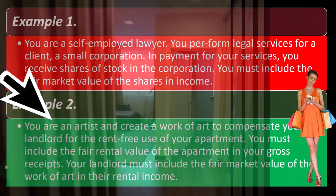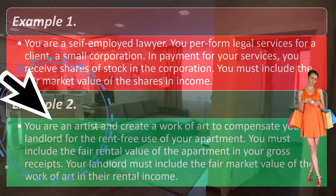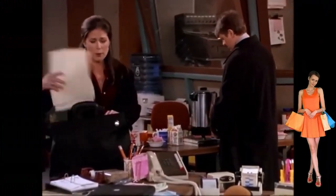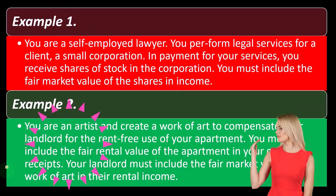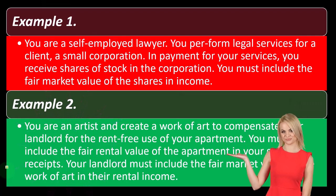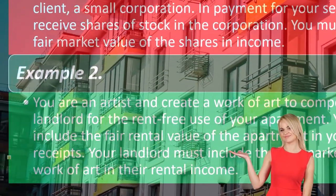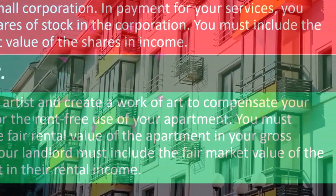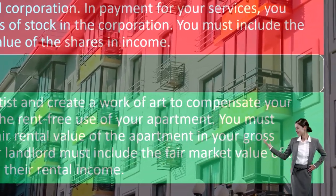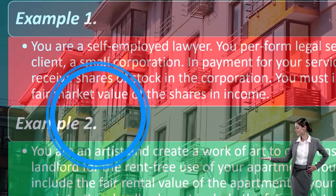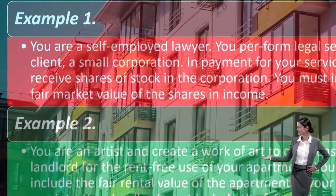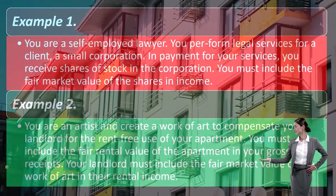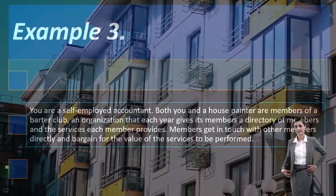Example two: you are an artist and create a work of art to compensate your landlord for the rent-free use of your apartment. You must include the fair rental value of the apartment in your gross receipts, because you were provided use of the apartment — you would have been paying rent otherwise. Your landlord must include the fair market value of the work of art in their rental income, because they got the work of art in exchange for the apartment.